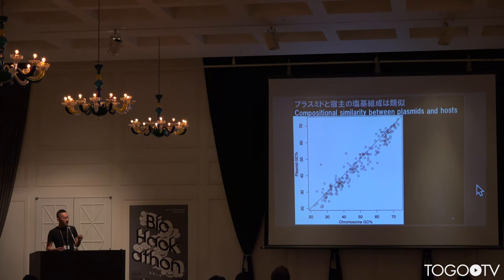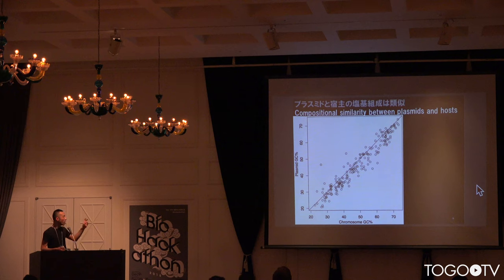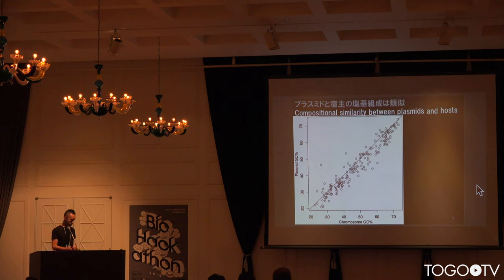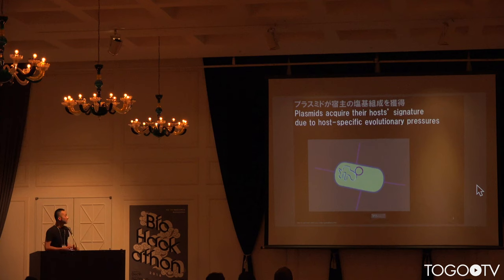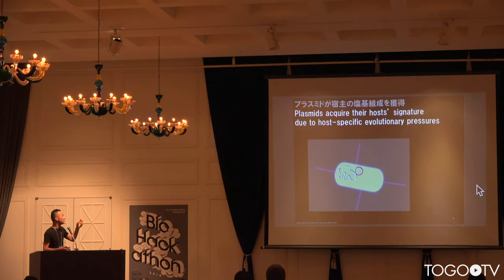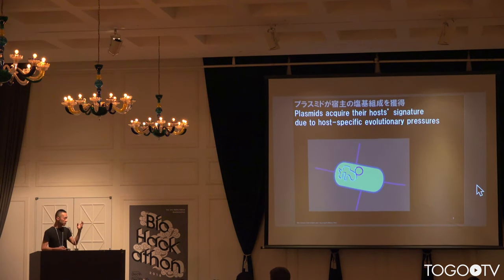For example, it has been shown that there is a strong correlation between plasmid GC content and their host chromosomal GC content. In this figure, each point denotes each plasmid–host chromosomal pair. This strong correlation suggests that plasmids have acquired host nucleotide composition — GC content — due to host-specific evolutionary pressure, host-specific selective pressure, and mutation bias.